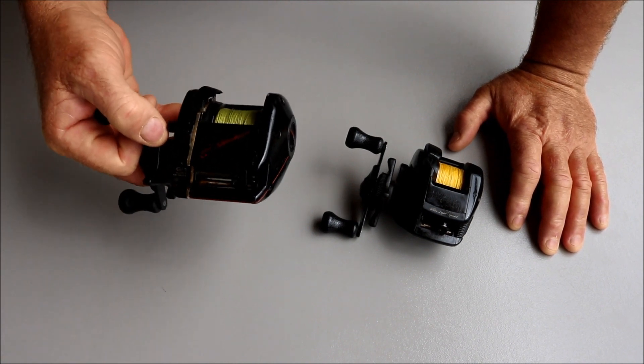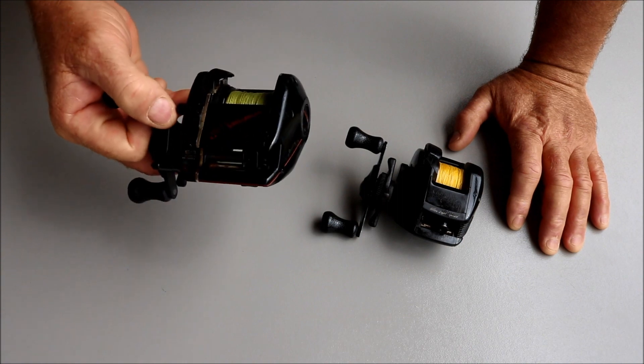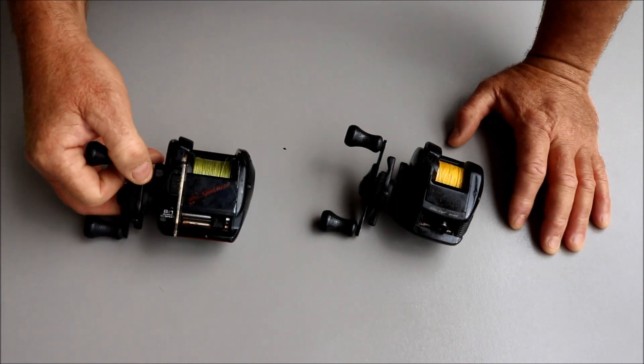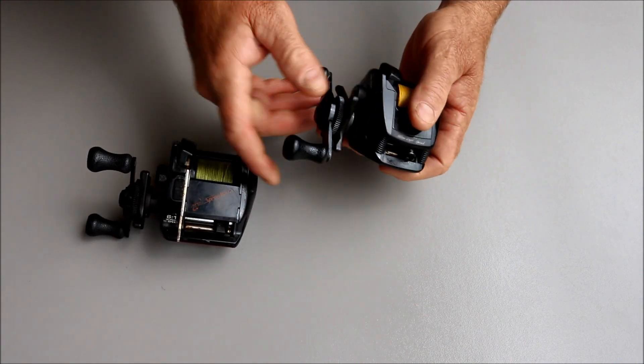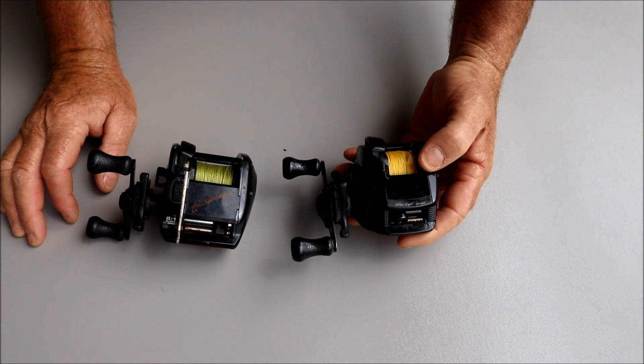I've used it down in Sydney chasing tailor, salmon and bonito. I've even caught a few kingfish on it. The smaller reel I've used for bass and bream and flathead over the years. But both reels have really stood the test of time and served me well.